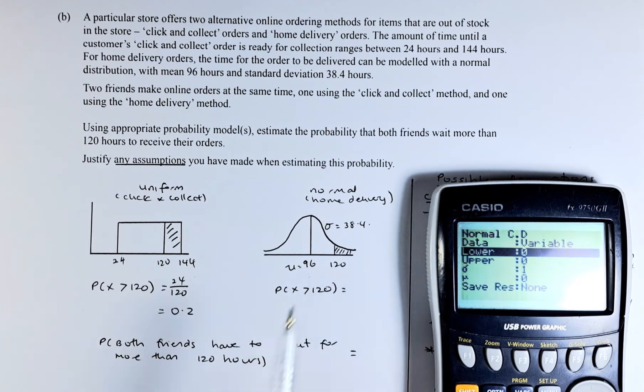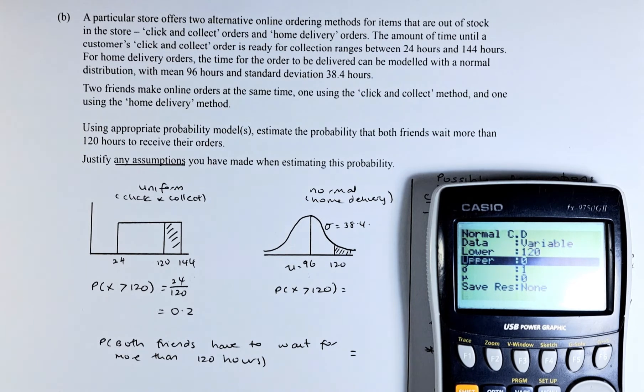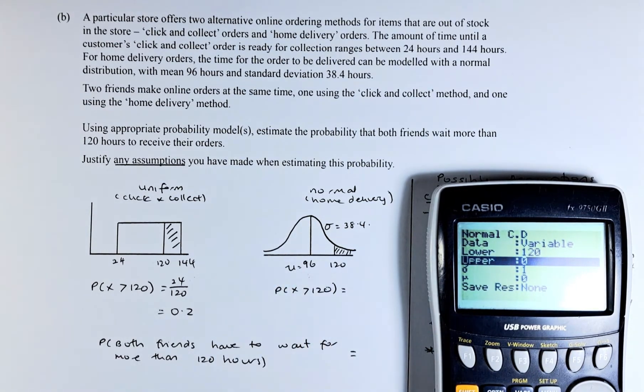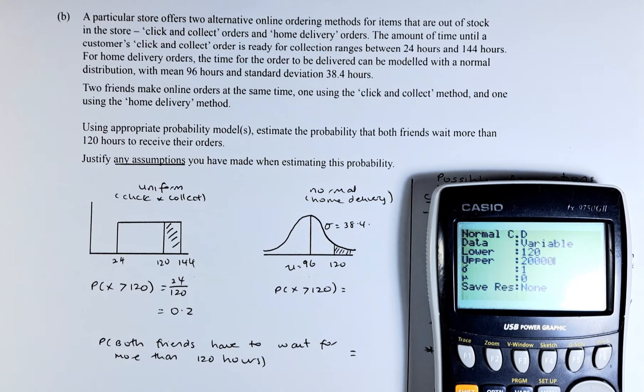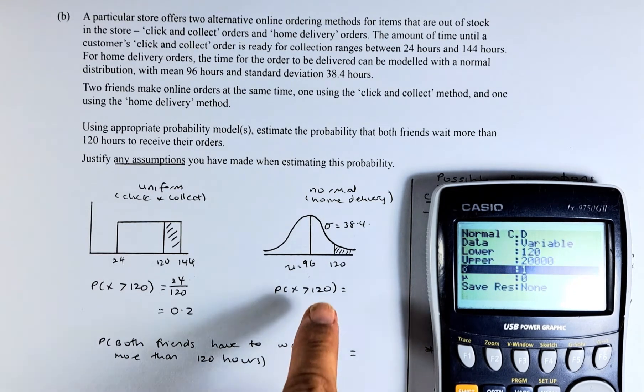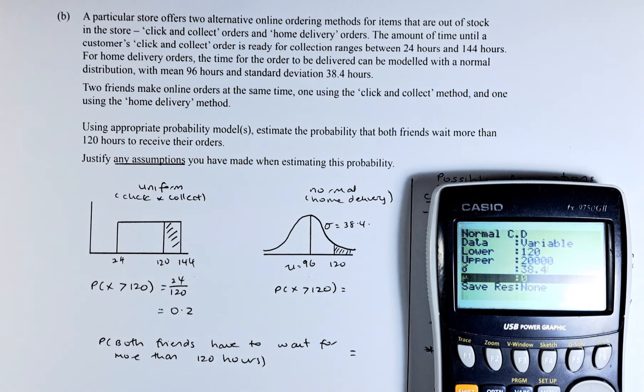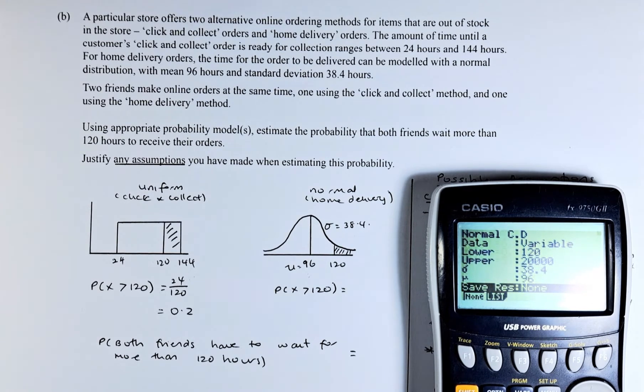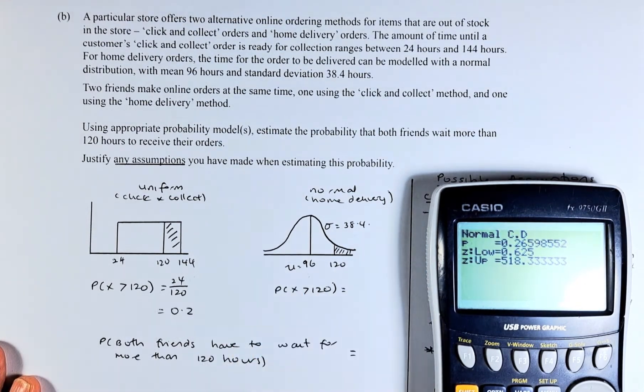Lower is where the probability starts. We start at 120, so we're going to put 120, execute. Then we calculate the upper - upper could be any number, say 20,000. Execute. σ is 38.4, and then μ is 96. Execute, execute, execute, and the answer is 0.2659.